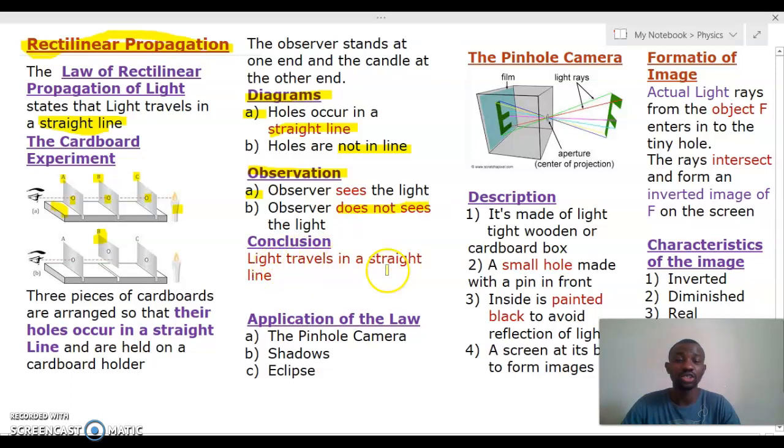So our conclusion is that light travels in a straight line. That is obvious because in diagram A the holes occurred in a straight line, and in diagram B the holes did not occur in a straight line. Of what use or benefits is this rectilinear propagation of light? Well, we itemize three of them here: A, the pinhole camera is based on this property or law; two, formation of shadows; and three, formation of eclipse.